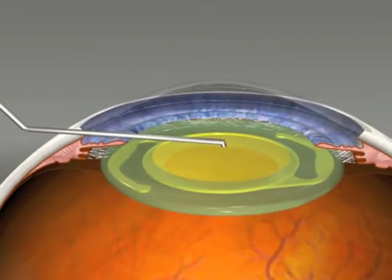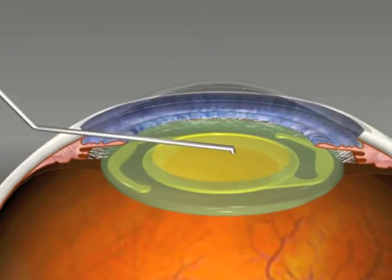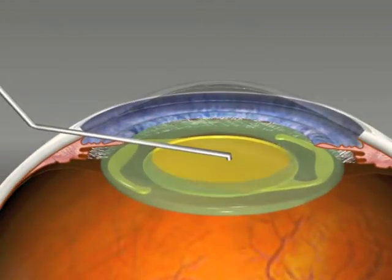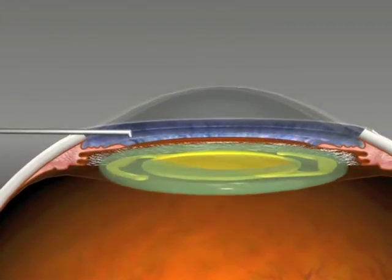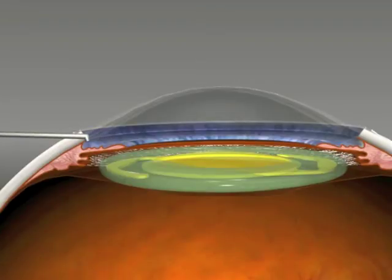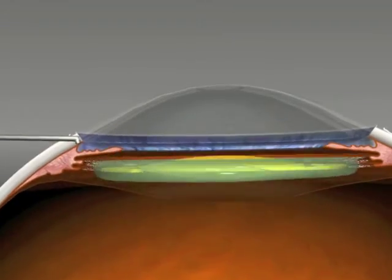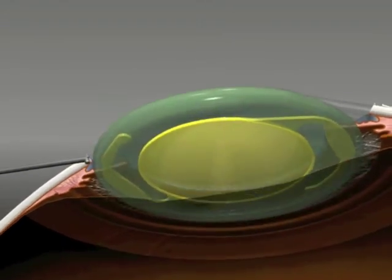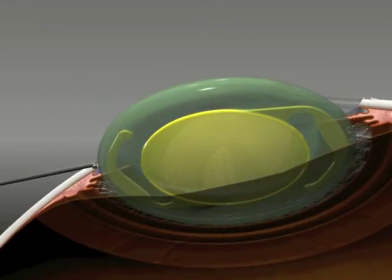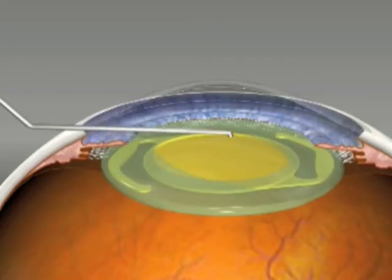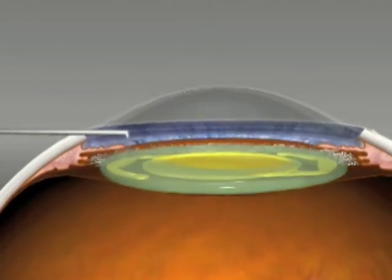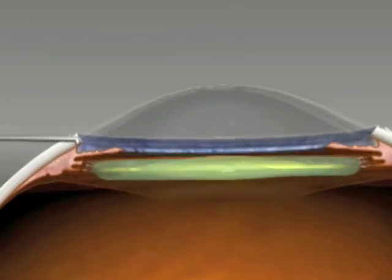In pediatric eyes we like to use posterior optic capture. I like the technique of sulcus placement of the haptics pushed through the anterior and posterior capsule rexus as published by Brian Dubroff, but a one-piece lens if that's all available can be put in the bag and then the optic pushed through the posterior capsule rexus.